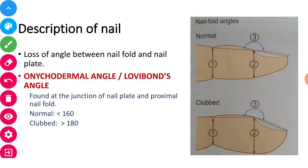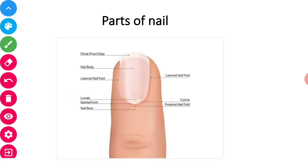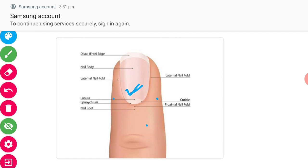Next we have one important term: the onychodermal angle and Lovibond's angle. But first let's see what are different parts of the nail. In this picture you can notice this is the nail body, and we can also call it nail plate.